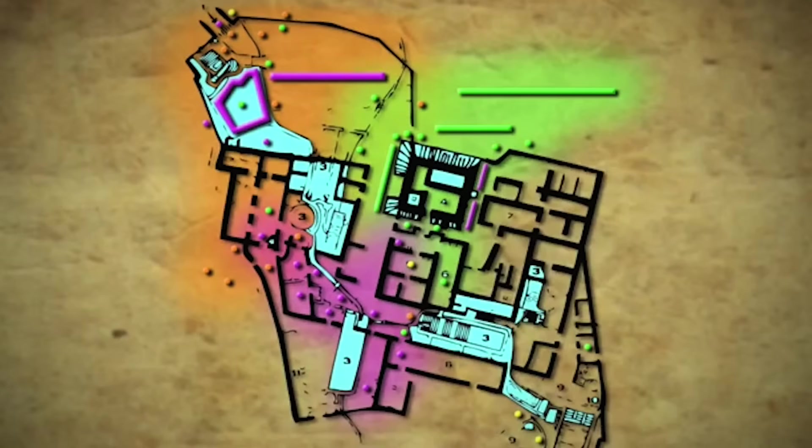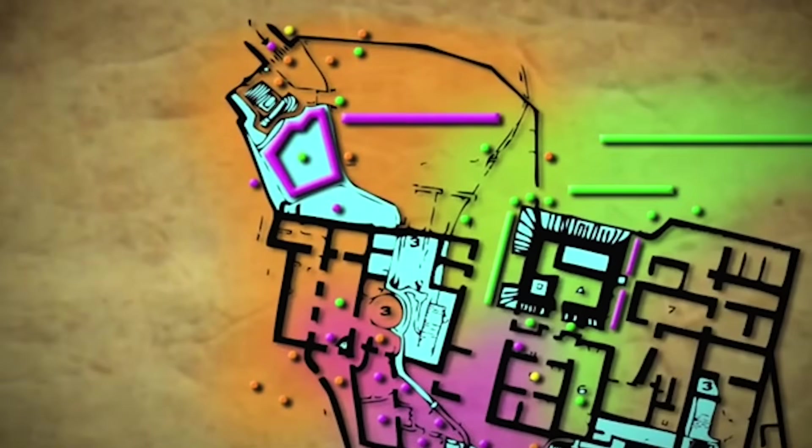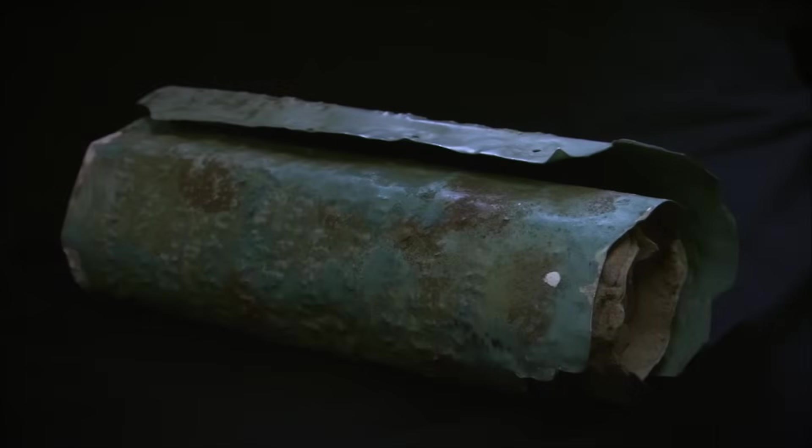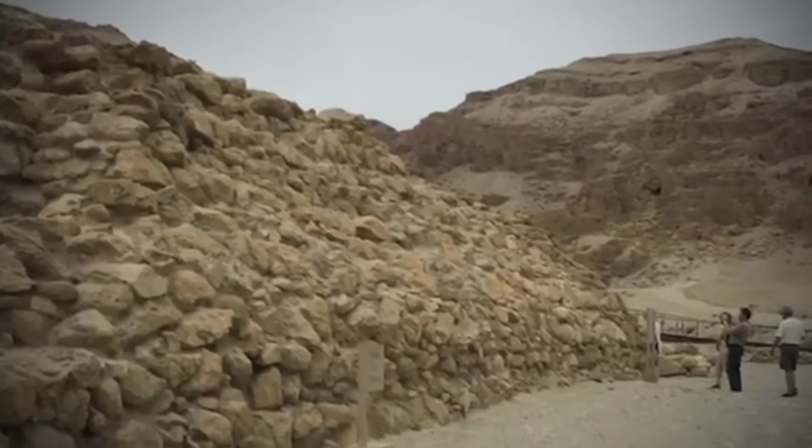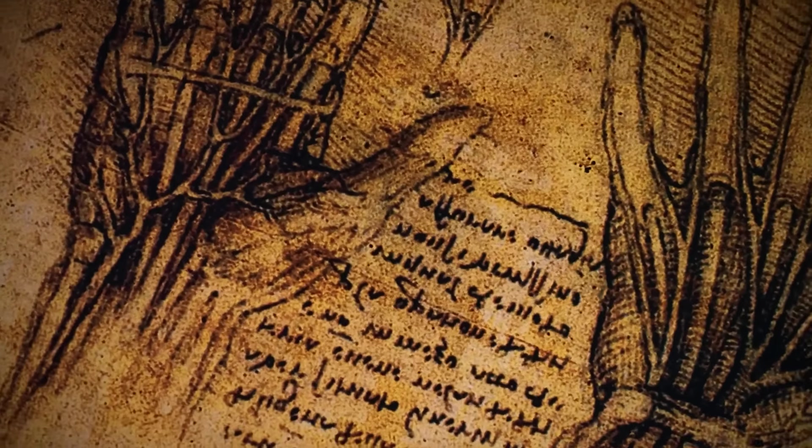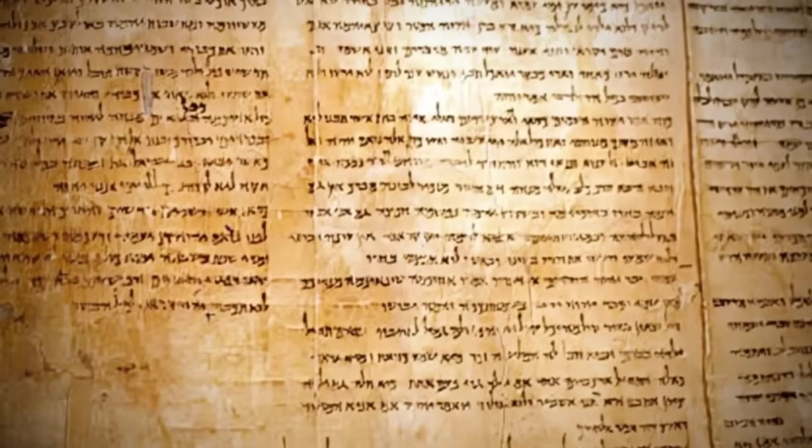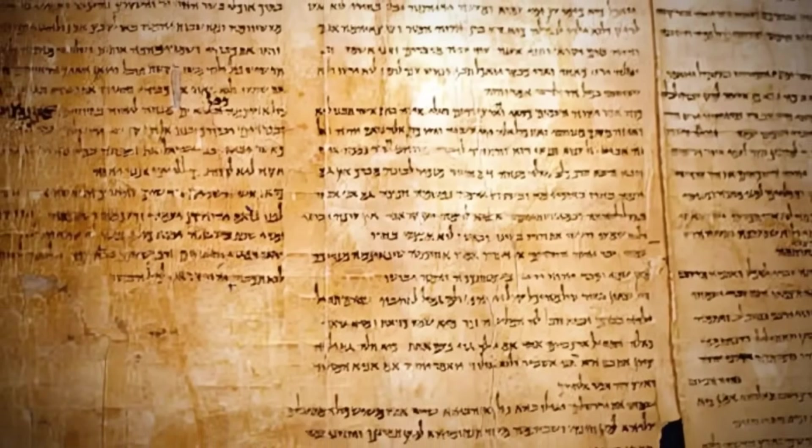Think about that for a moment. A first-century document potentially referencing technology that shouldn't exist for another 1,900 years. Today we'll explore how this line could change how we see ancient history, and what might be hidden beneath the desert. Was this a poetic description of something mundane, or evidence of knowledge that rewrites our understanding of the ancient world?